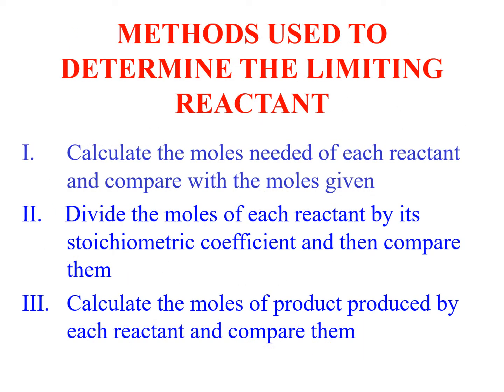How to determine limiting reactant? First is you calculate the moles needed of each reactant and compare with the moles given. Or you can divide the moles of each reactant by its stoichiometric coefficient and then compare them. And the third, calculate the moles of product produced by each reactant and compare them. These are three ways of determining the limiting reactant.